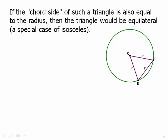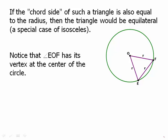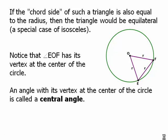Alternatively, if we're given two radii and a 60-degree angle between them, we know that if we draw the third chord, we will have an isosceles triangle, so that third chord would necessarily have a length equal to the radius. Notice that angle EOF has its vertex at the center of the circle. This is a very special kind of angle. An angle with its vertex at the center of the circle is called a central angle.